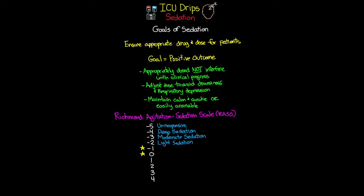A score of negative two is 'light sedation' — the patient is briefly awake with eye contact to voice stimulation for less than 10 seconds. Negative one is 'drowsy' — the patient is not fully alert but sustains more than 10 seconds of wakefulness with eye contact to voice. Zero is 'alert and calm.' A score of one is 'restless' — the patient is anxious or apprehensive but not aggressive. Two is 'agitated' — frequent non-purposeful movements or patient-ventilator dyssynchrony. Three is 'very agitated' — pulling on lines and tubes or aggressive behavior toward staff. Four is 'combative' — the patient is overtly combative or violent and poses immediate danger to staff.